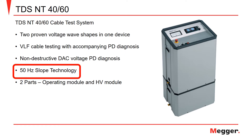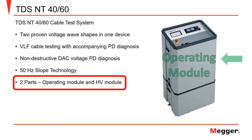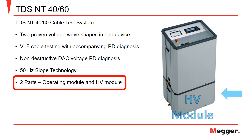The 50-hertz slope technology utilized with the TDSNT cable test system is directly comparable to power frequency for reliable evaluation of PD measurements. The TDSNT cable test system consists of two units: the upper operating module and the lower high voltage module.